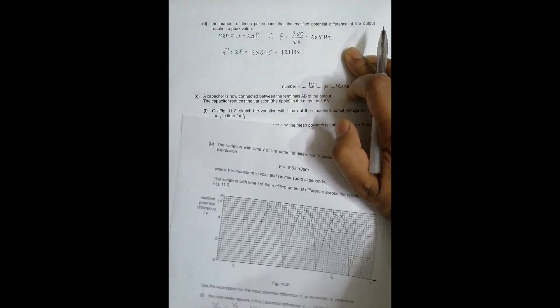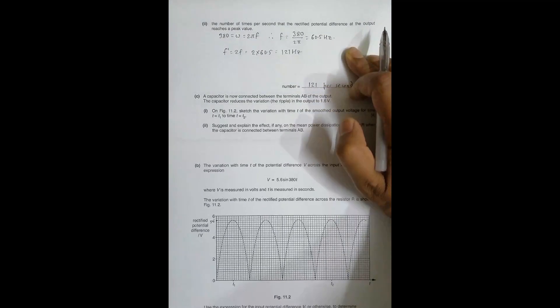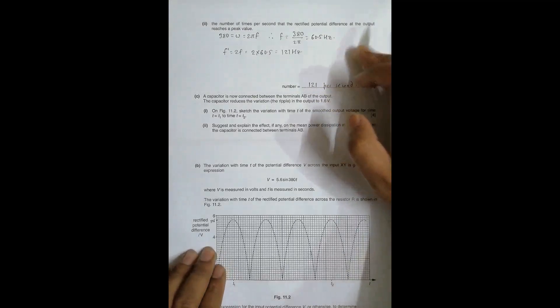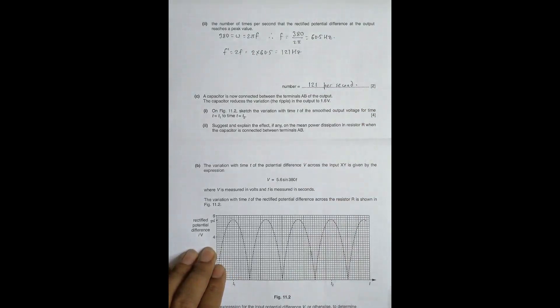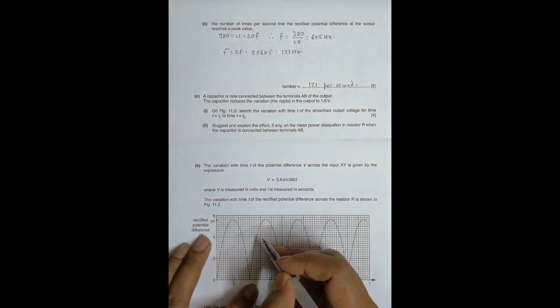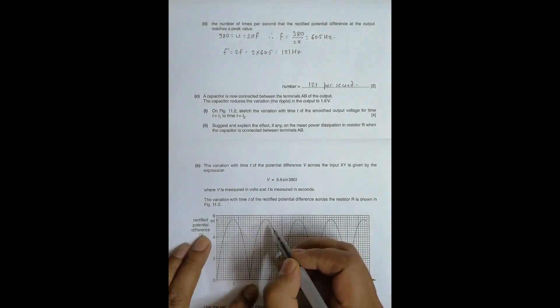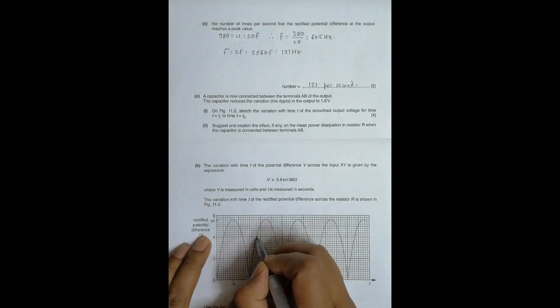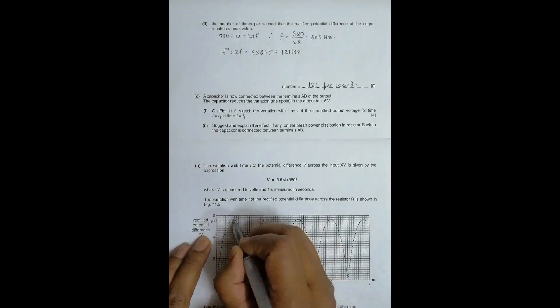On figure 11.2, sketch the variation with the time t of the smoothed output voltage for time t equal to t1 to t equal to t2. So here we have to draw the variation now. So if the variation reaches from 5.6 to 4.0. So 4.0, 5.6, 5.6.